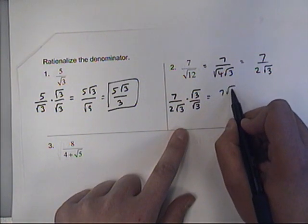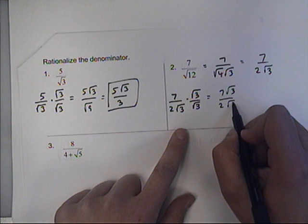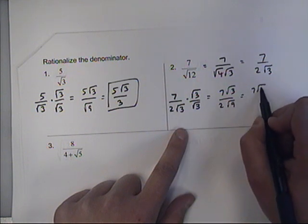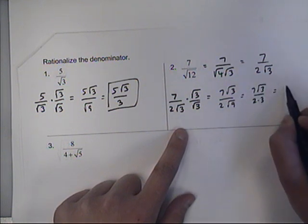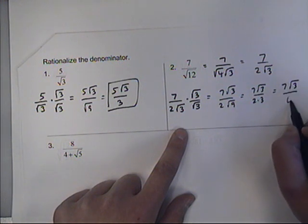All we're doing is using the root, which is our root 3, just as with example 1. So that would be 7 root 3 over 2 times the square root of 9, which is 3, so 2 times 3. Okay, so we get 7 root 3 over 6.